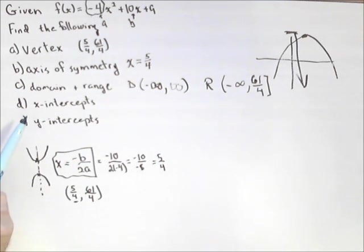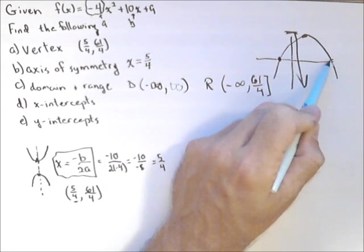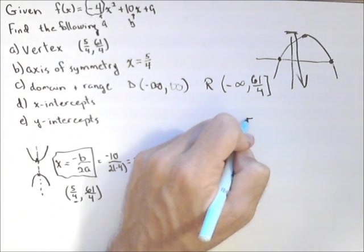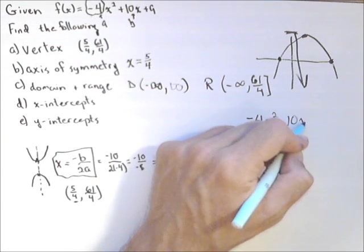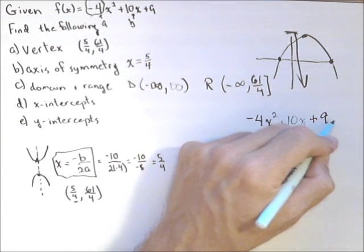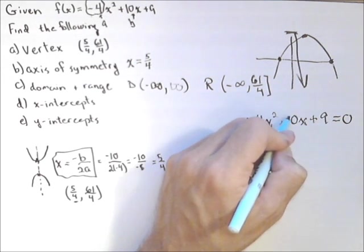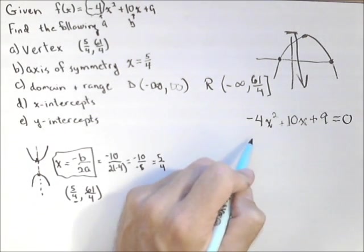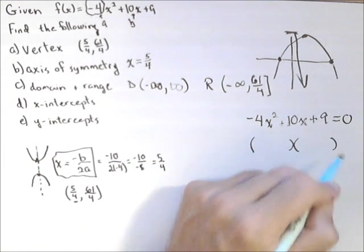Next thing is our x-intercepts. Because our vertex was above the x-axis and it opened downwards, we see that we have two of them. So let's see if we can do this algebraically. We want to find where -4x² + 10x + 9 = 0. Now we'll always try factoring first, but a fallback is always the quadratic formula. Let's see if we can get this thing to factor into two distinct factors.